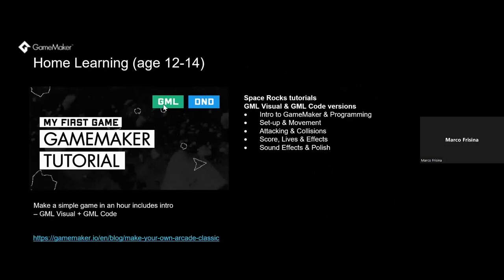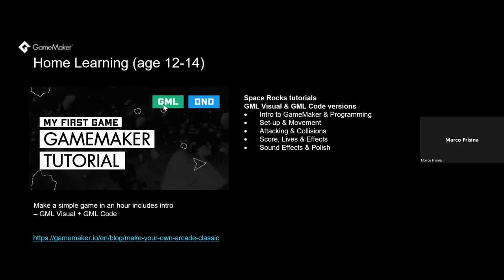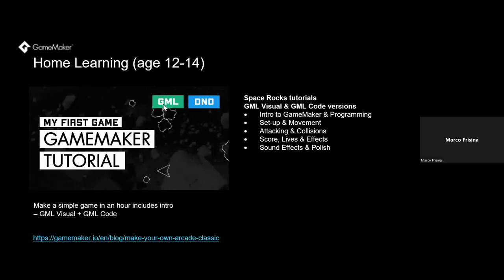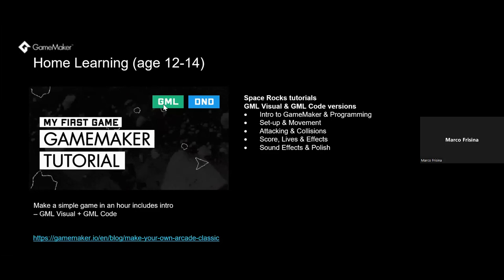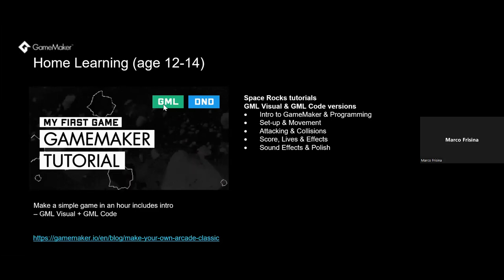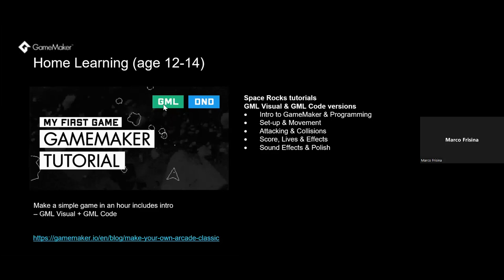Moving on to video tutorials that don't require a teacher to lead: this is Space Rocks, the first of our consumer tutorials where students can learn on their own. This game is based on the classic Asteroids game, created for beginner level with many of the same mechanics as Space Bubbles. It covers both GML Visual and GML code, so you can make a game in GML Visual and then remake it in GML code to better understand how the logic translates. This is an official tutorial made by a community educator called Friendly Cosmonaut. The focus is to retain engagement through quick wins — within the first few minutes, students will have created a ship and got it moving.